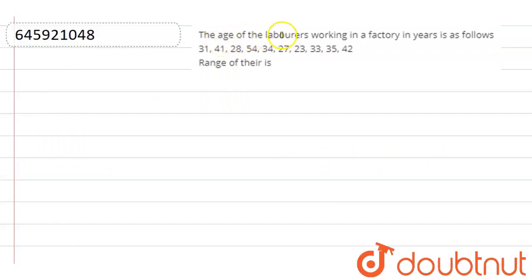Hello everyone, the age of the laborers working in a factory in years is as follows: 31, 41, 28, 54, 34, 27, 23, 33, 35, and 42. Find the range of their ages.